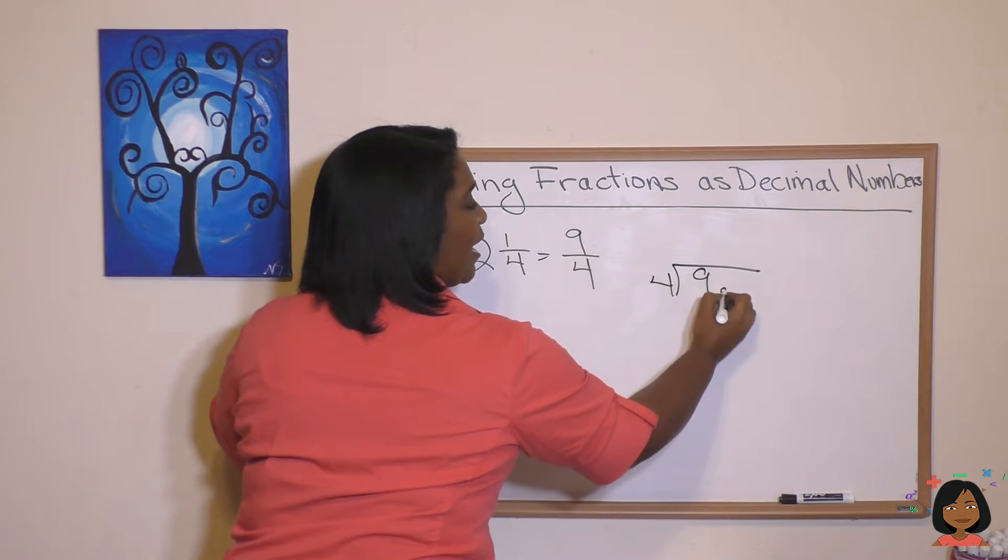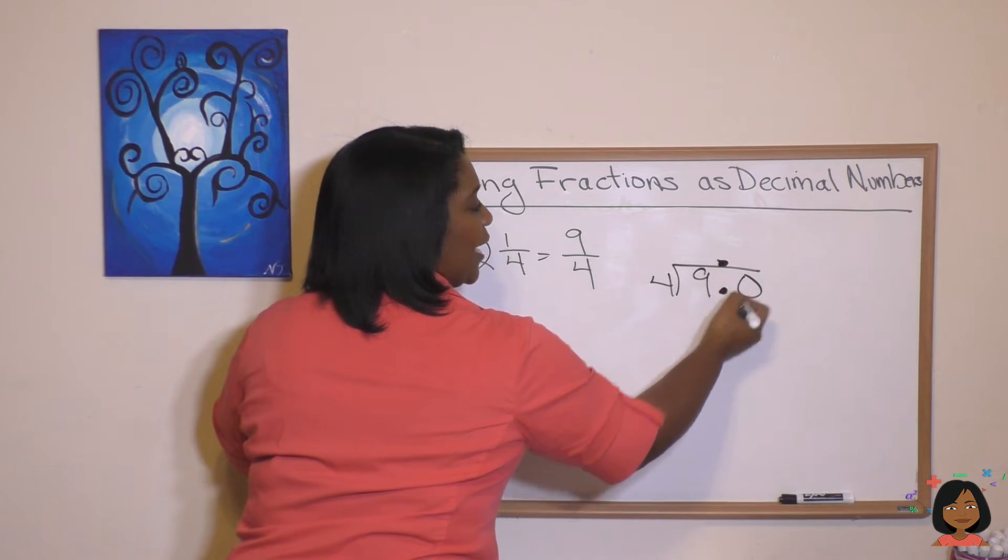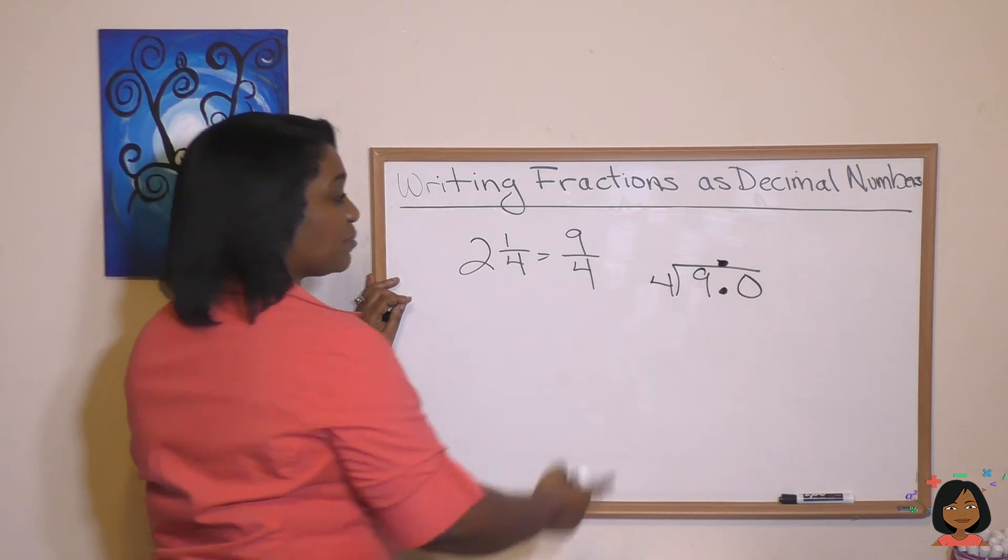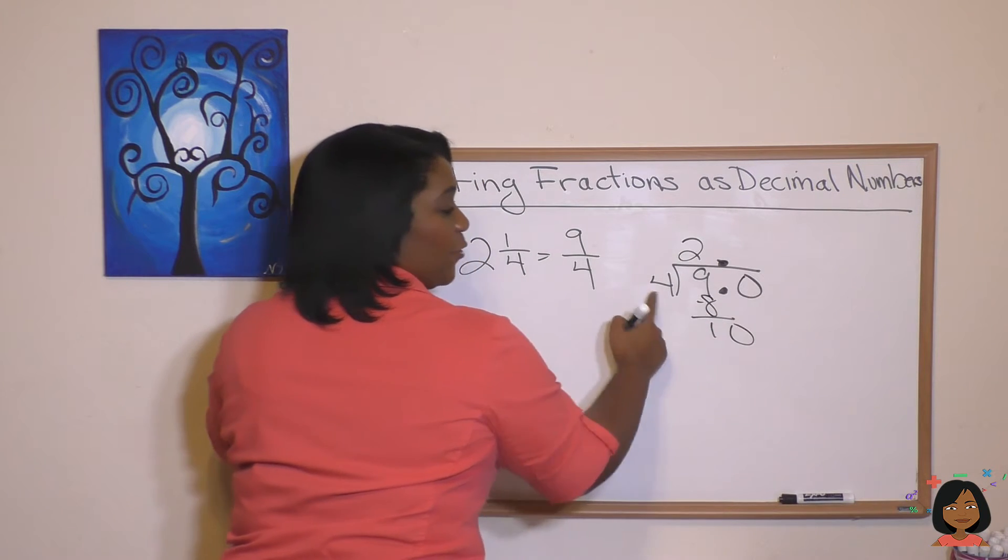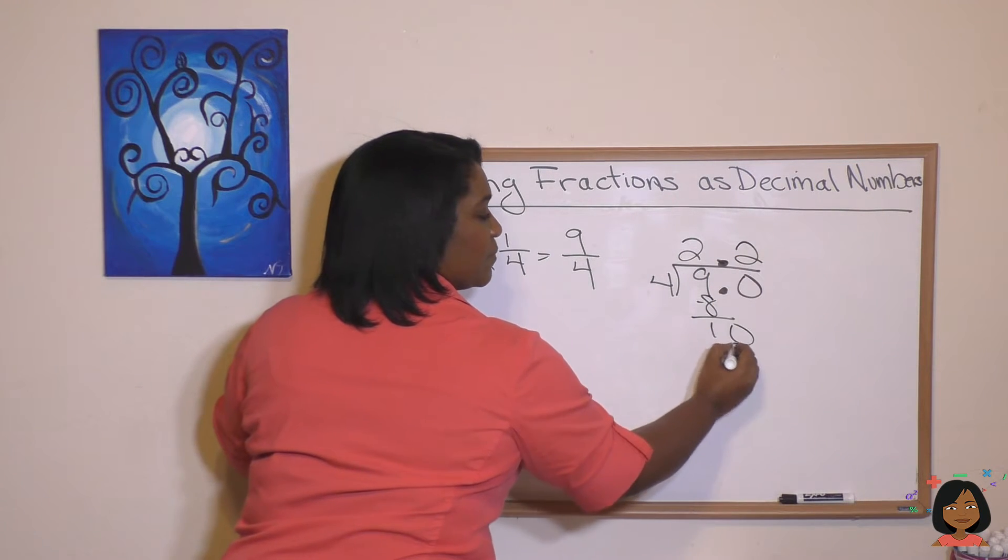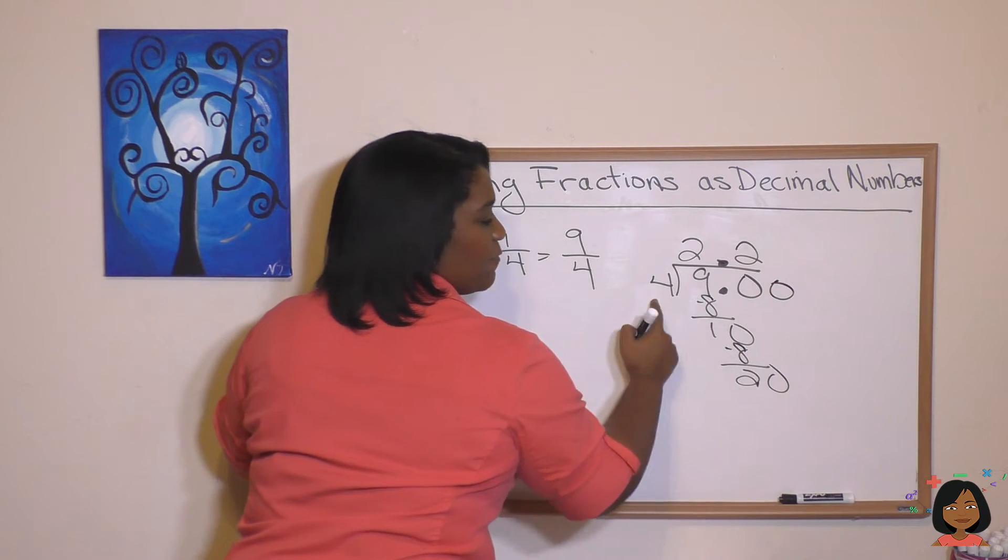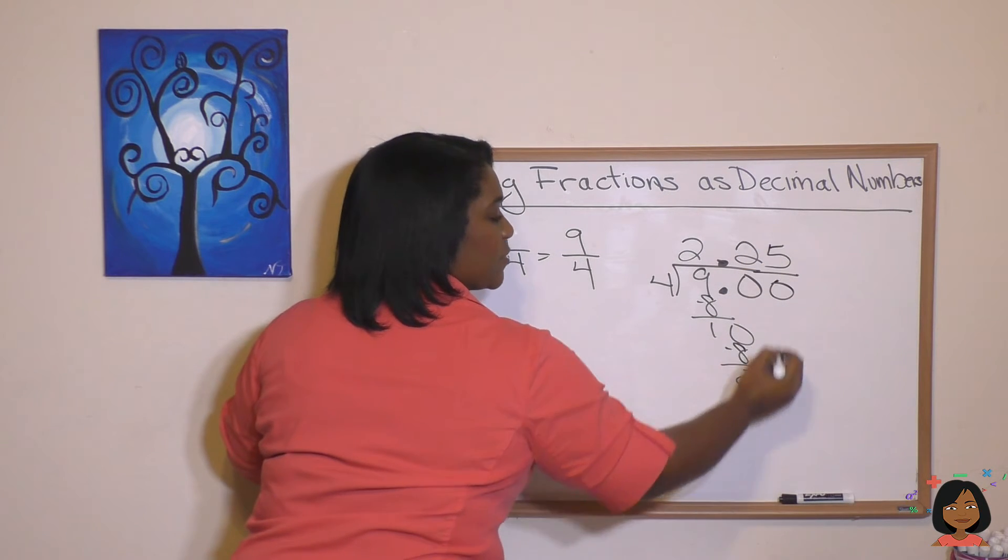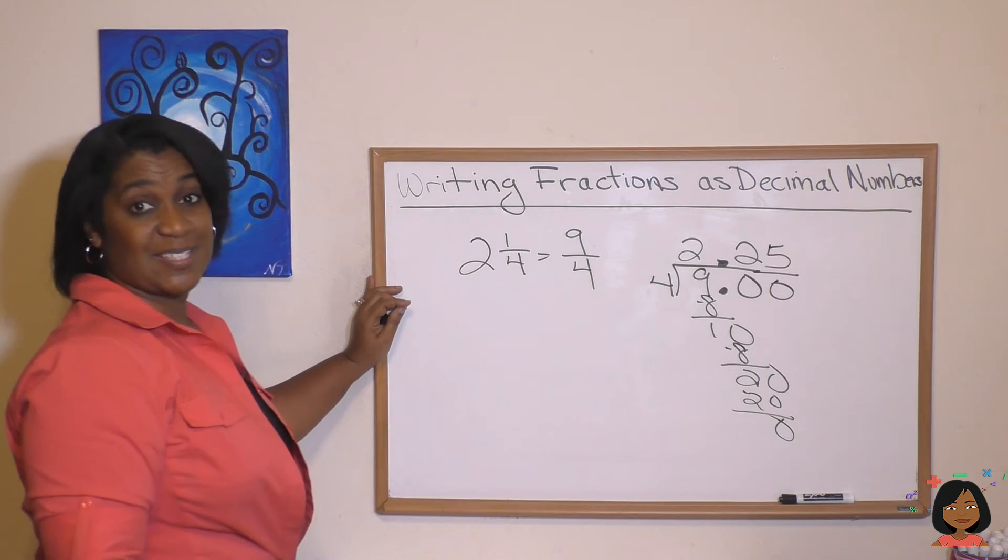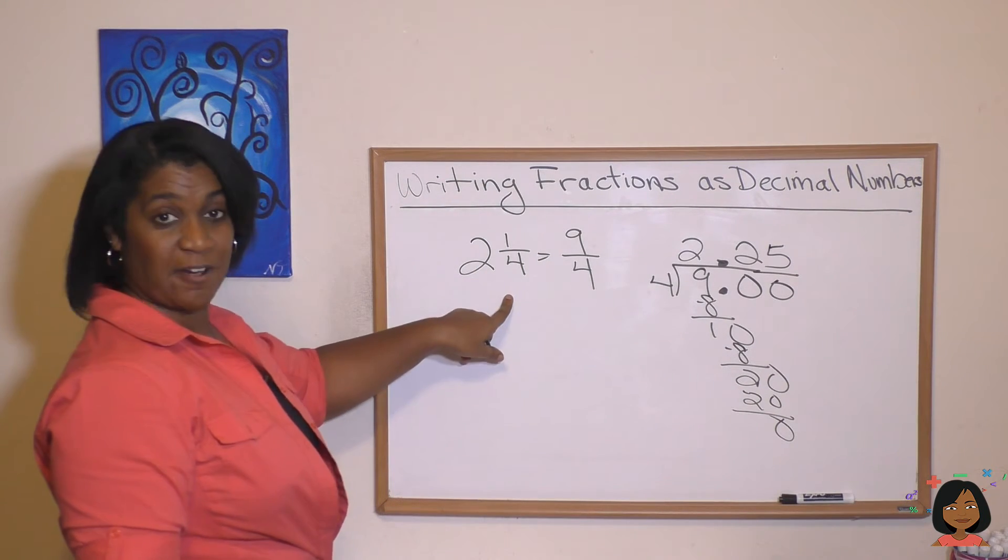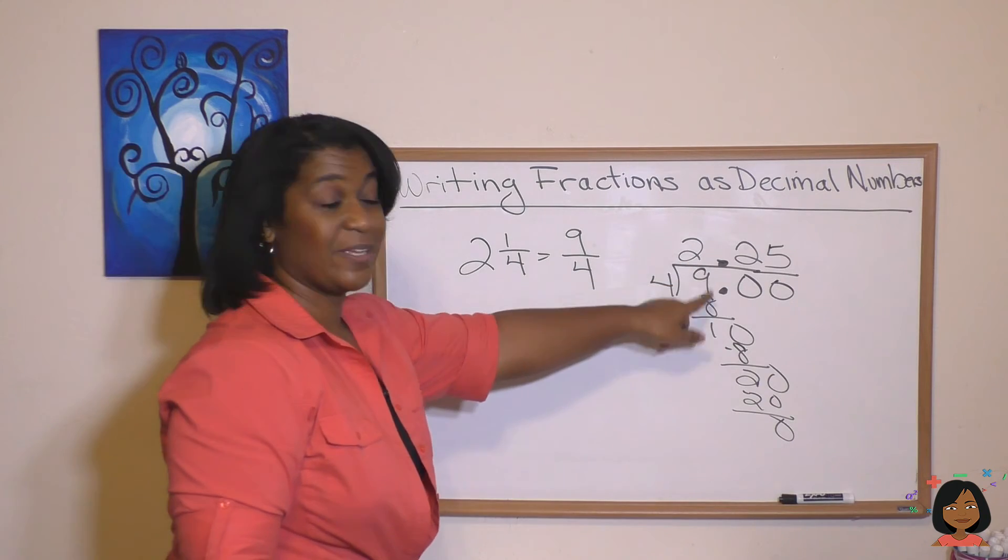4 goes into 9. I'm going to add my decimal and at least a 0. Here we go. 4 goes into 9, 2 times. 4 goes into 10, 2 times. Add another 0. 4 goes into 20, 5 times. And we're out with the 0. So the decimal equivalent for 2 and 1/4 is 2.25.